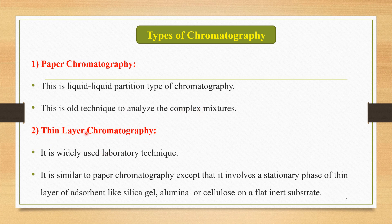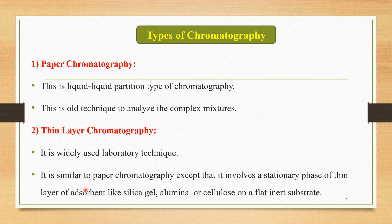The second type is thin layer chromatography, also called TLC. It is a widely used laboratory technique. TLC is similar to paper chromatography except that it involves a stationary phase of a thin layer of adsorbent — like silica gel, alumina, or cellulose — on a flat inert substrate. In paper chromatography, paper is used instead.